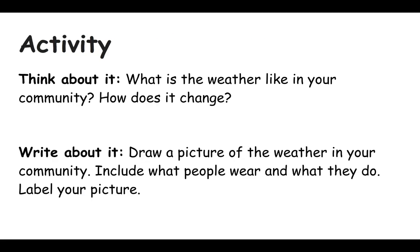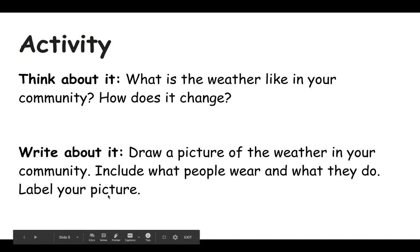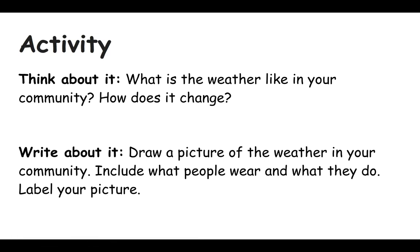Now that you know more about how weather affects where we live and what we do, I have an activity for you. I want you to think about what is the weather like in your community — remember we live in Southern California, in the city of Los Angeles. Think about the weather: how does it change? Is it always the same? Does the weather change during different seasons? After you think about that, you're going to draw a picture of the weather in your community — what is the weather like today? I know if we did this lesson last week we all probably would have said it was rainy. When you draw your picture, include what people would wear and what they would do. Label your picture and tell me what kind of weather it is — is it sunny, cloudy, raining, or snowing?